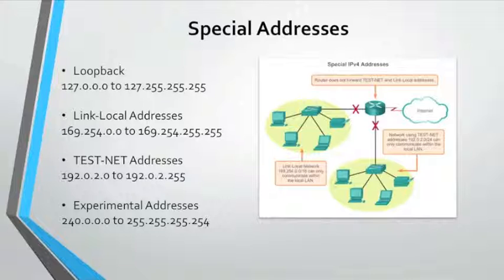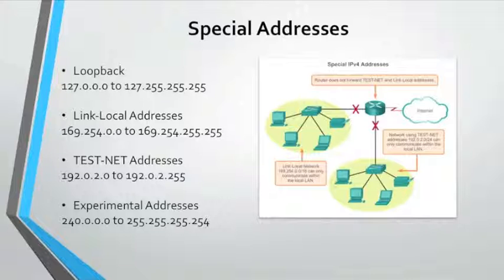No addresses within the loopback block should ever appear on any network. Link-local addresses can be automatically assigned to the local host by the operating system in environments where no IP configuration is available. This might be used in a small peer-to-peer network or for a host that could not automatically obtain an address from a DHCP server. Link-local addresses do not provide services outside of the local network; however, many client-server and peer-to-peer applications will work properly with IPv4 link-local addresses. The testnet address block is set aside for teaching and learning purposes and can be used in documentation and network examples.